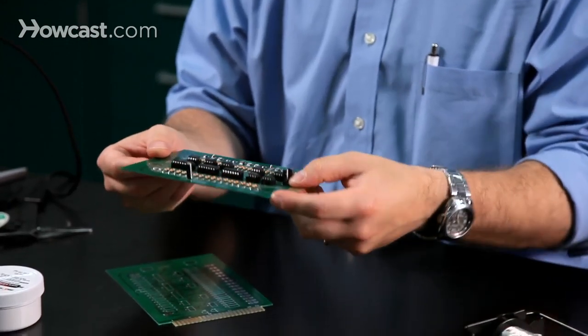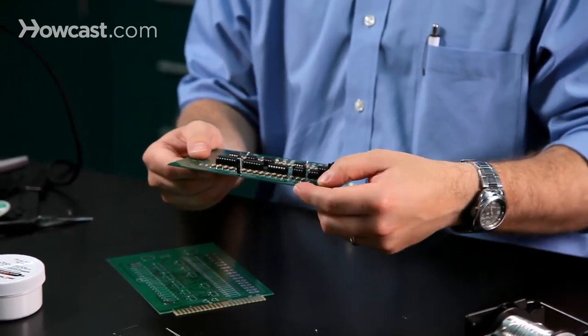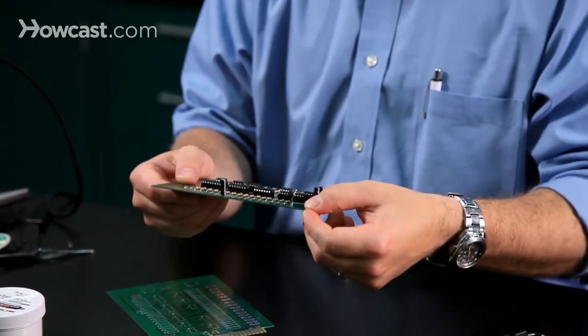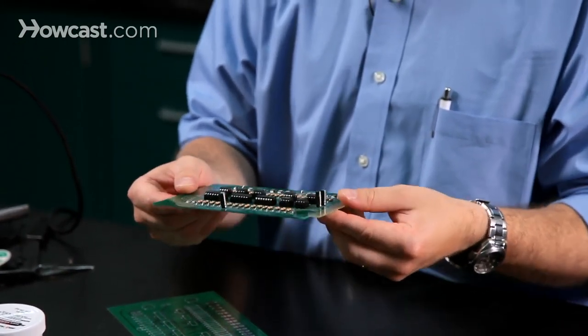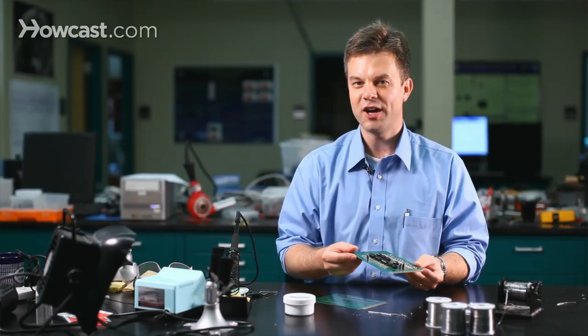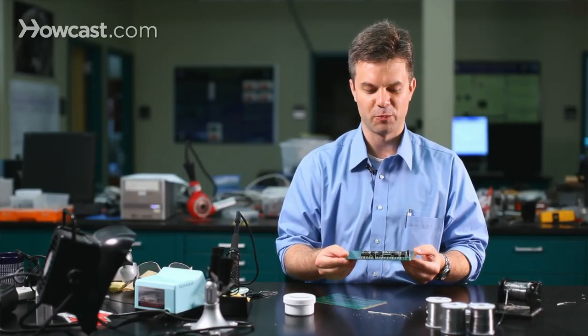The nice thing about fiberglass is that it has very high temperature operation. It doesn't burn until it hits three or four hundred degrees Fahrenheit, and it also makes an excellent insulator. FR4 is the most common material for printed circuit boards.